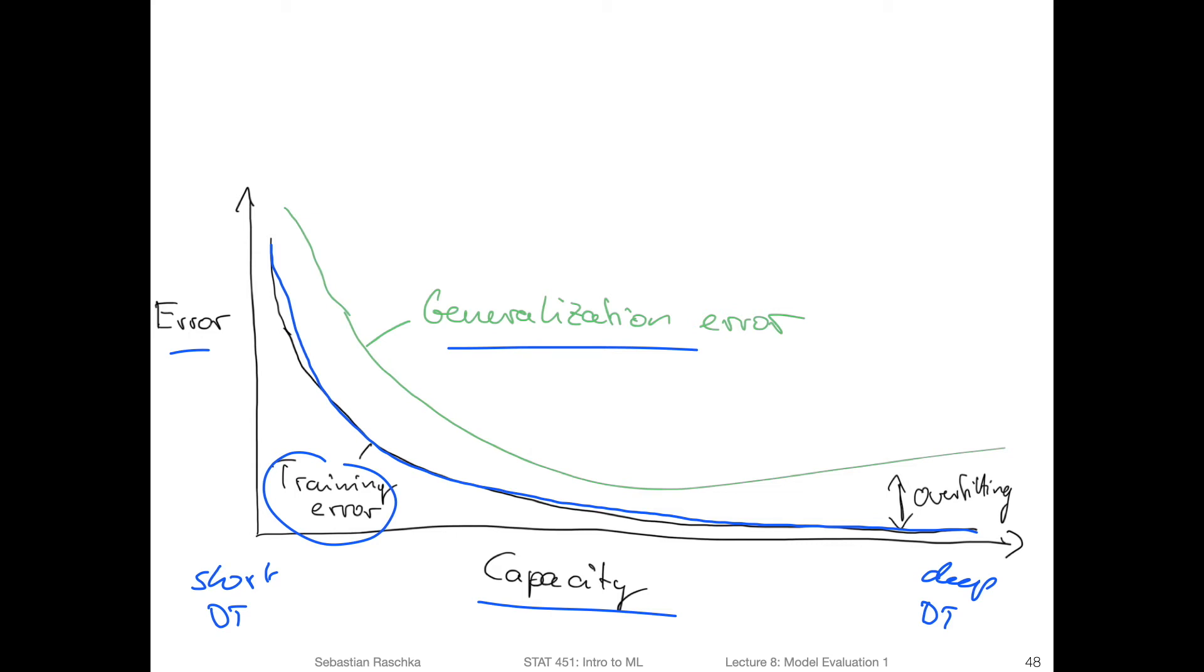And that is measured by the generalization error. For example, the generalization error can be estimated from an independent test set. And the generalization error at first improves somewhat if the capacity becomes larger, because if the model is too simple—a short decision tree will neither be able to fit the training set well nor perform well on new data, because it's just too simple of a model.